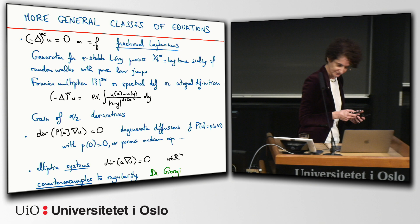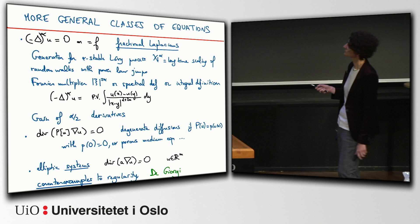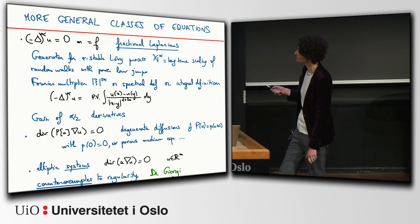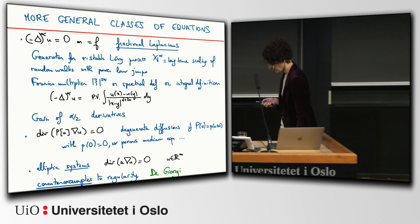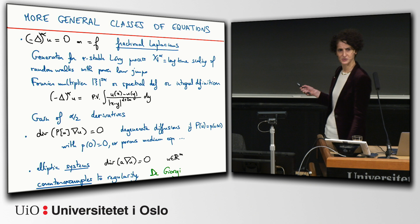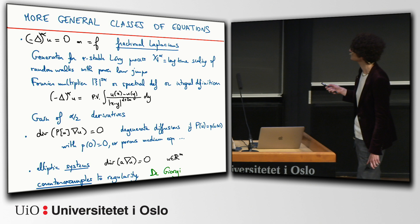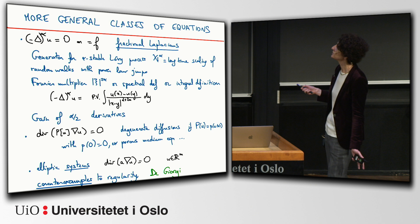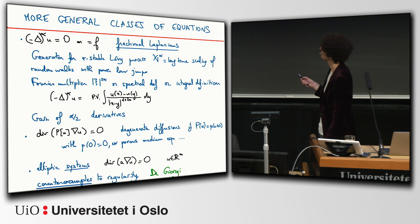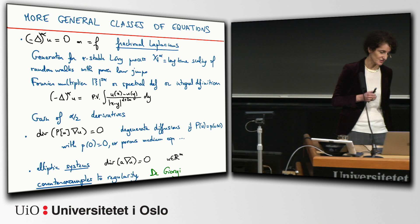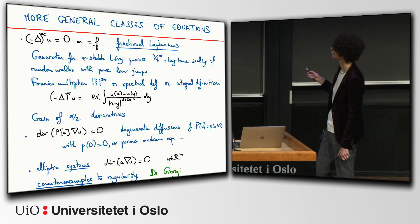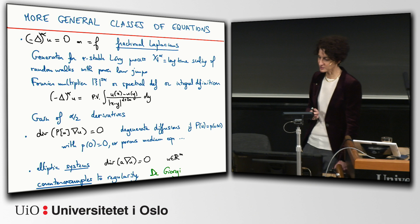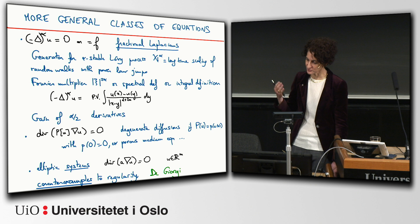Another class of equations is degenerate diffusions. It's a bit like divergence of A grad U, but the twist is that the coefficient — the diffusion structure — depends on U itself. It can be a function p(U), and the difficult case is when p(0) = 0, because where the solution vanishes, the diffusion coefficient also vanishes and you lose diffusion. Very interesting phenomena happen there. This is what occurs in the porous medium equation, which is an important physical equation — another class on which Luis Caffarelli has worked and where elliptic regularity ideas must be developed.